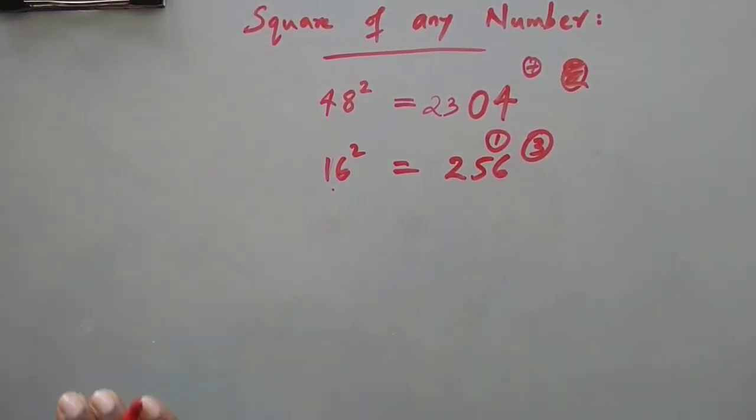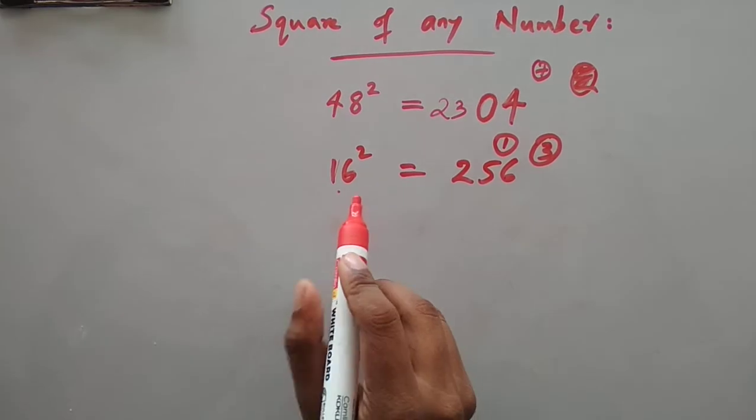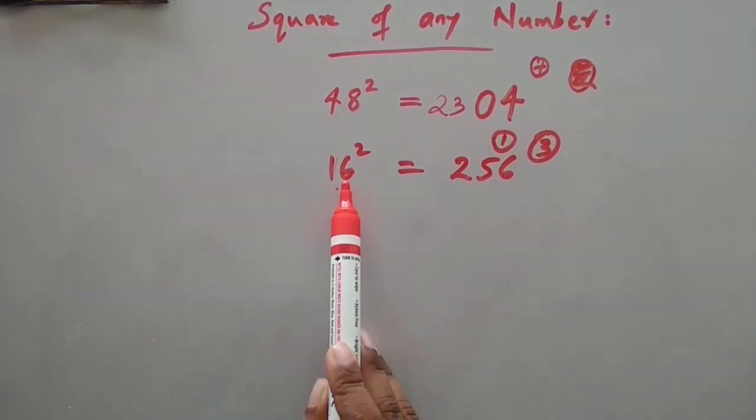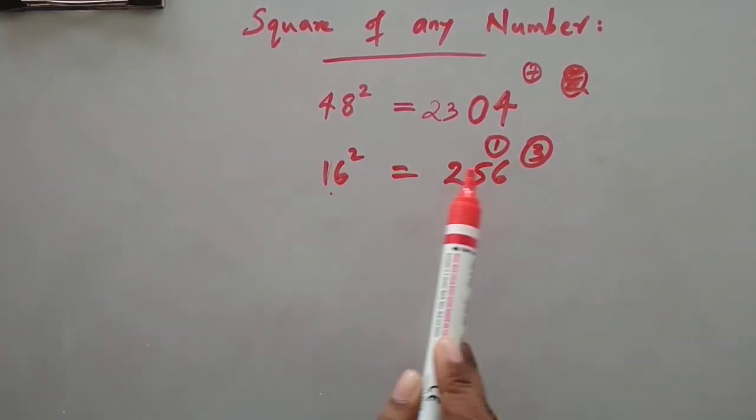I will explain it to you once more. What we have to do is first find the square of this number, that is 6 square is 36.